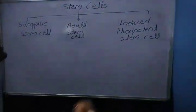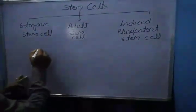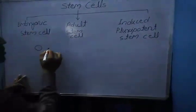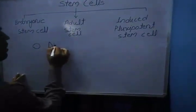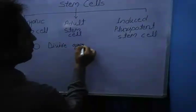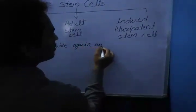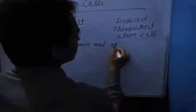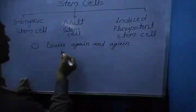Now the stem cells have two specific functions. The first function: it divides again and again to form new cells in this way.